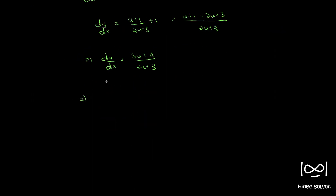Using the method of separation of variables and bringing all terms of u to one side, we get 2u plus 3 by 3u plus 4 du equal to dx.